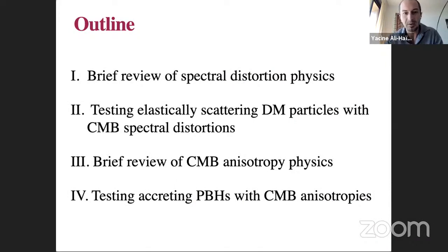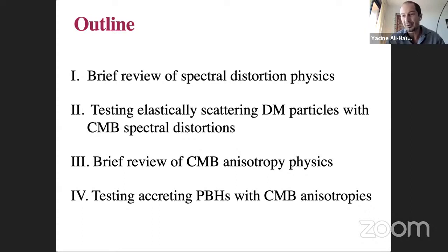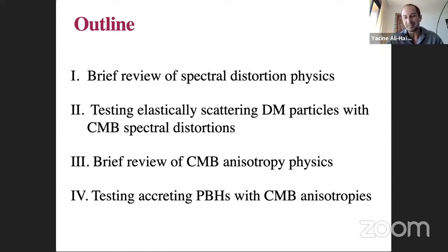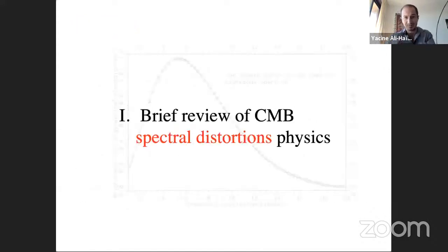The outline is: first, spectral distortions — briefly reviewing the underlying physics and showing how current upper limits and future experiment sensitivities can constrain dark matter elastically scattering with photons, electrons, or nuclei. Then, in the second part, I'll review CMB anisotropies and show how one can test accreting primordial black holes.